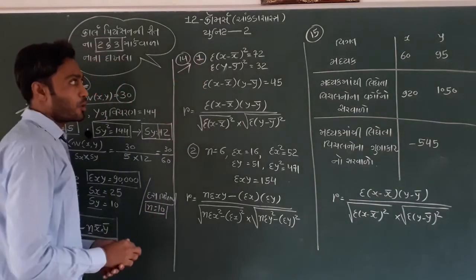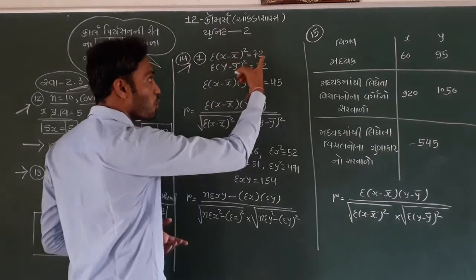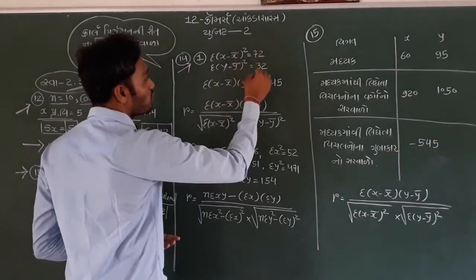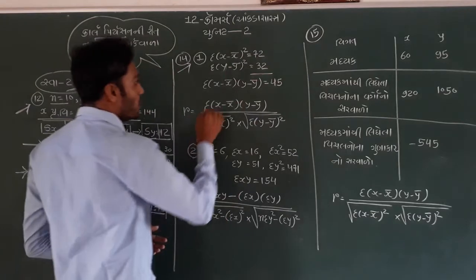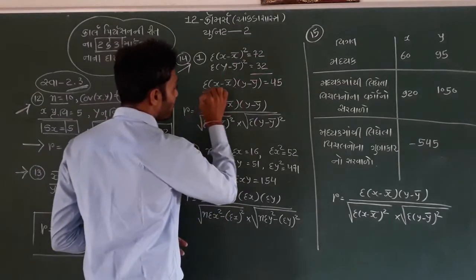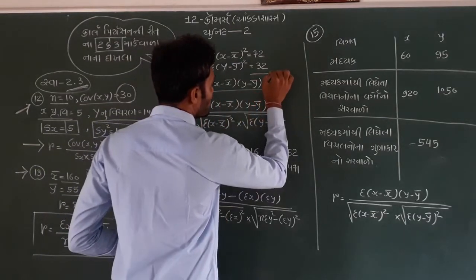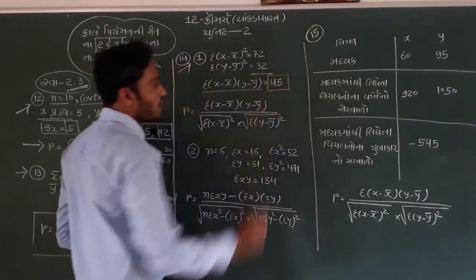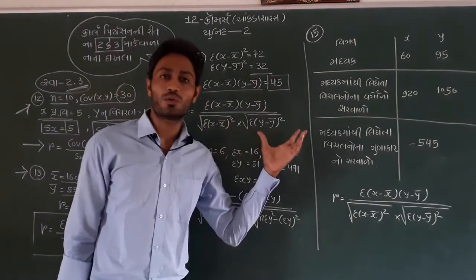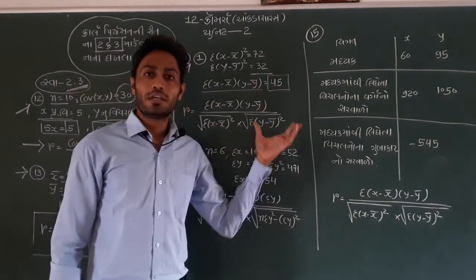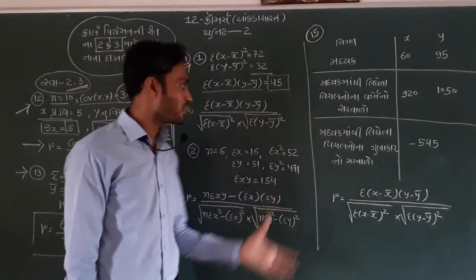As you can see, x minus x-bar squared is 32. y minus y-bar squared is 32. Then we have x minus x-bar and y minus y-bar — how much is it? You can see. This is so simple. Let's try it out. x minus x-bar and y minus y-bar — we have to write the math here.